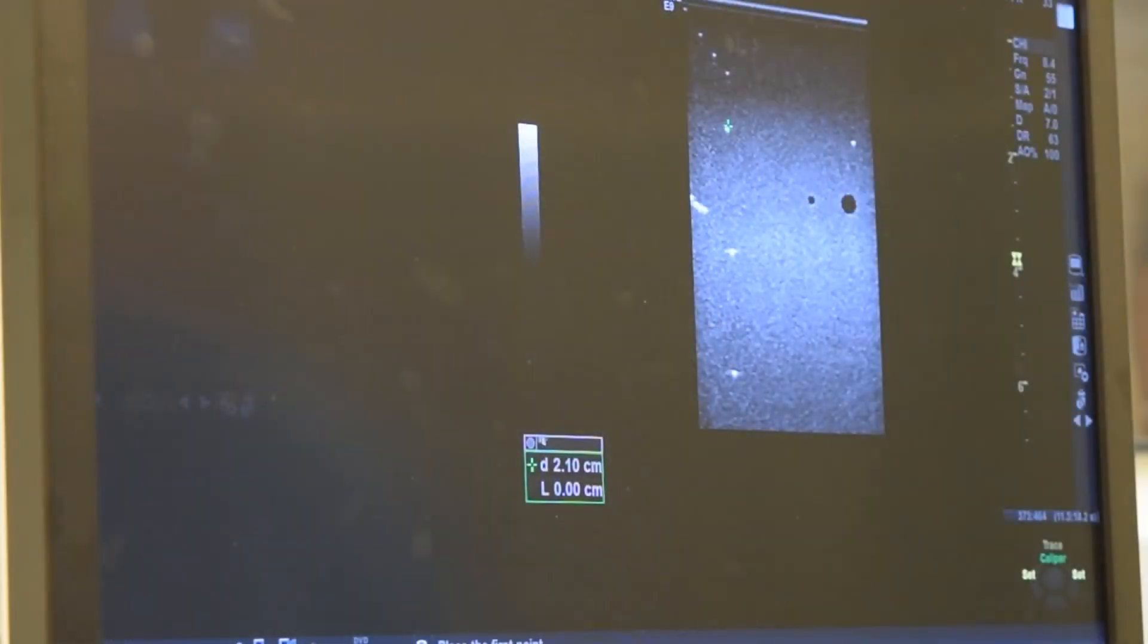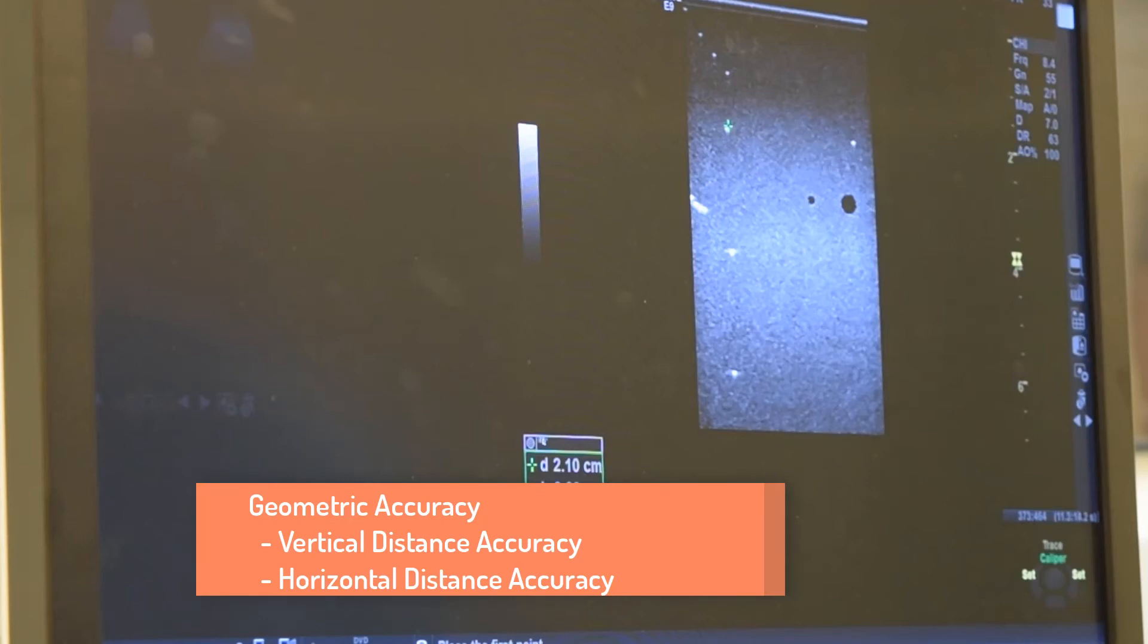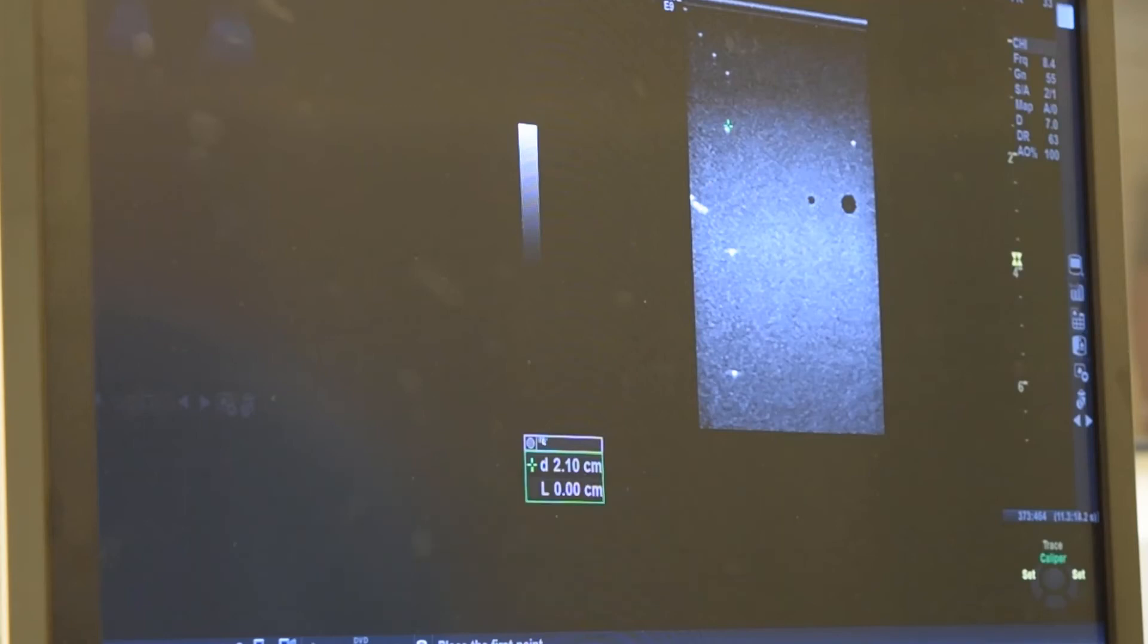The fourth test we carry out is to look at the geometric accuracy of the scanner, specifically how accurately are distance measurements done using a digital caliper. This is done using cursors that are set by the operator. There are two components, vertical distance accuracy and horizontal distance measurement accuracy. For this test, we've adjusted the field of view so that we can visualize reflectors down to a depth of around 7 centimeters.